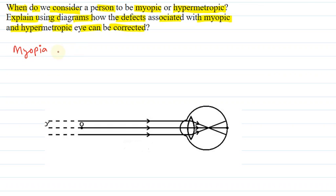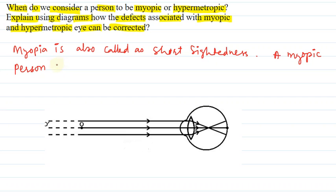Myopia is also called short-sightedness. A myopic person has clear vision for near objects.